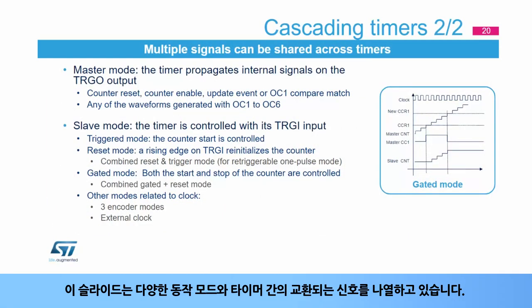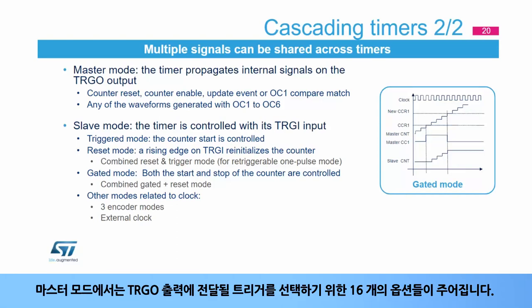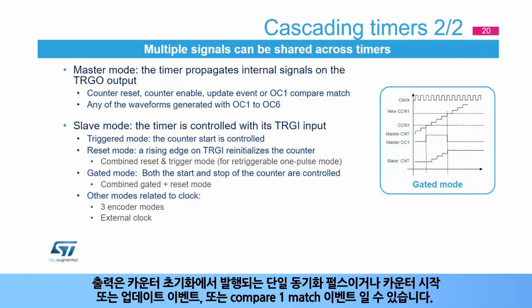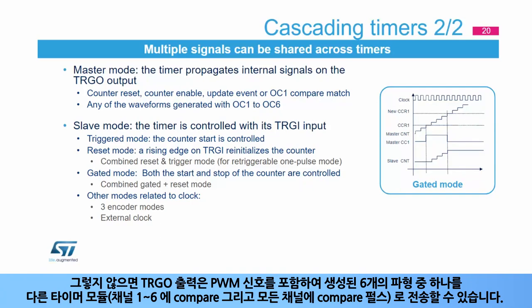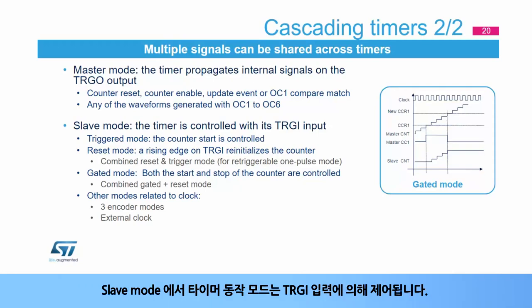In master mode, 16 options are given for selecting the trigger sent on the TRGO output. The output can be a single synchronization pulse issued upon counter reset, counter enable (counter start), the update event, or the compare 1 match event. Alternatively, the TRGO output can also transmit one of six generated waveforms including PWM signals, compare on channels 1 to 6, and compare pulses on all channels.